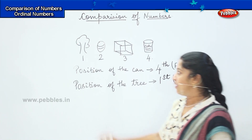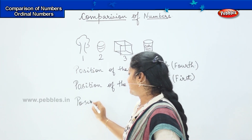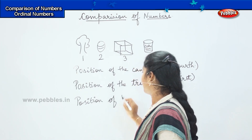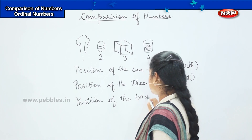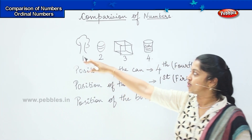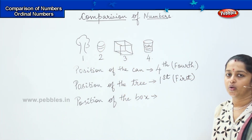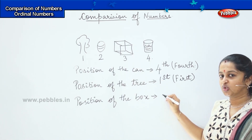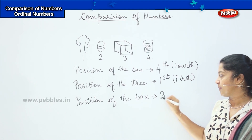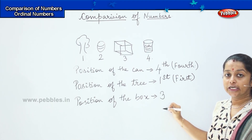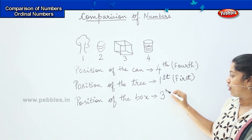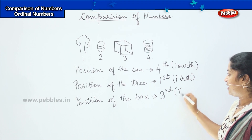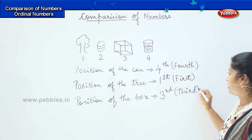Can you tell me the position of the box in the given picture? See and tell me where the box is located — is it one, two, three, or four? Good — it is in the third position. So what will I write? I will write 'third' — after three, I write 'rd' on top, which is called third: t, h, i, r, d — third.